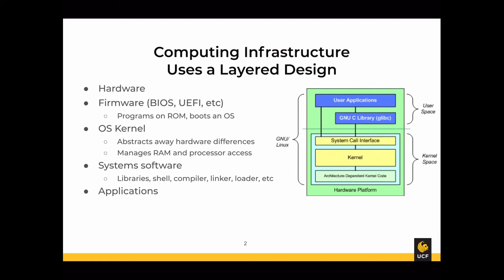The next layer is system software — the topic of this course. This includes your libraries, the command line shell, compilers, linkers, loaders — all of the software that programmers, system users, and administrators need in order to operate and run software on their machine. And at the top layer we have applications: your browser, your games, your application software.